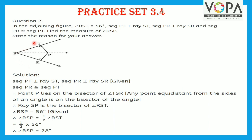Since angle RST is given as 56 degrees, angle RSP is equal to half of angle RST. Substituting the value: angle RSP is equal to 56 divided by 2, which is 28 degrees.